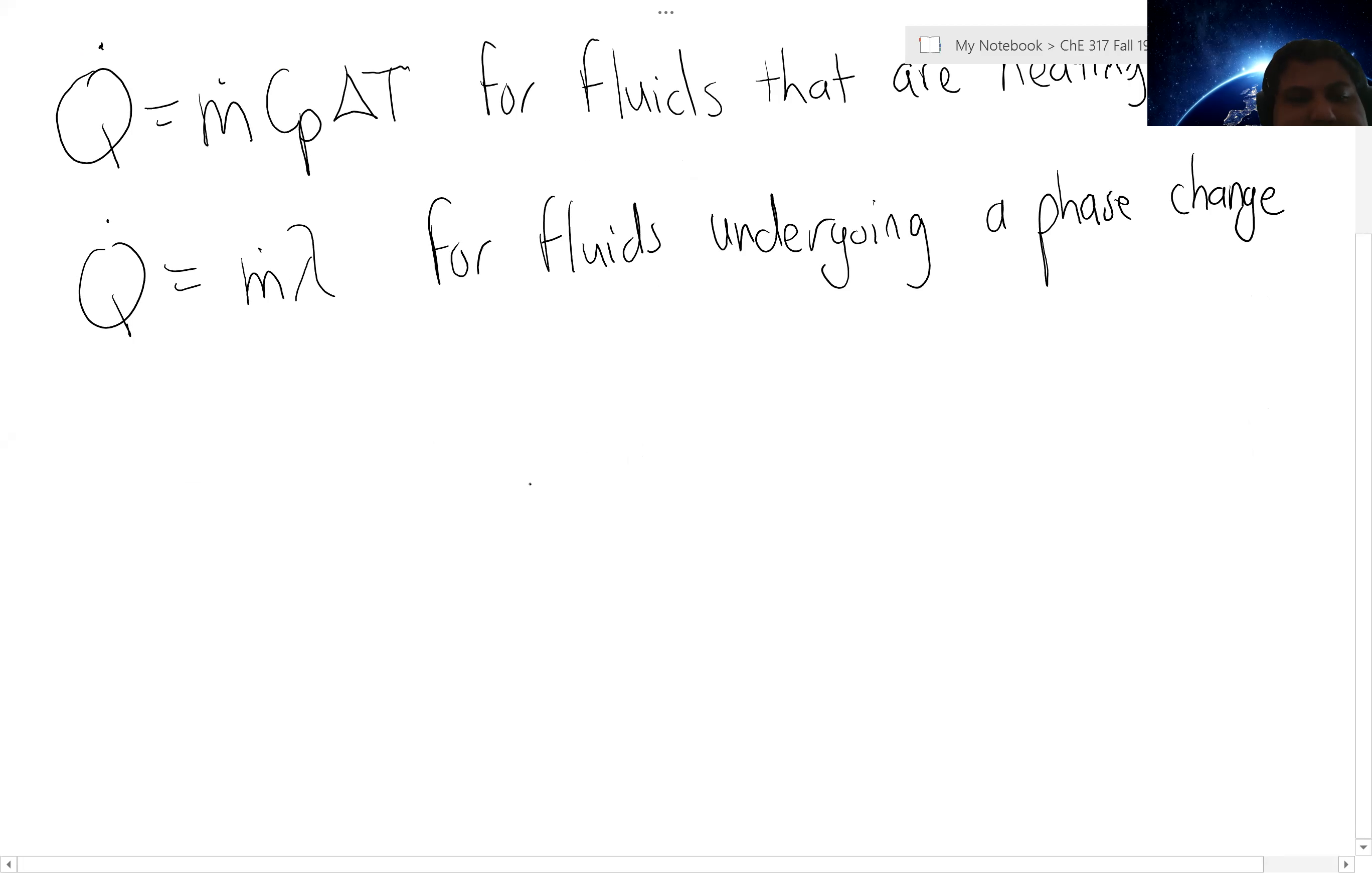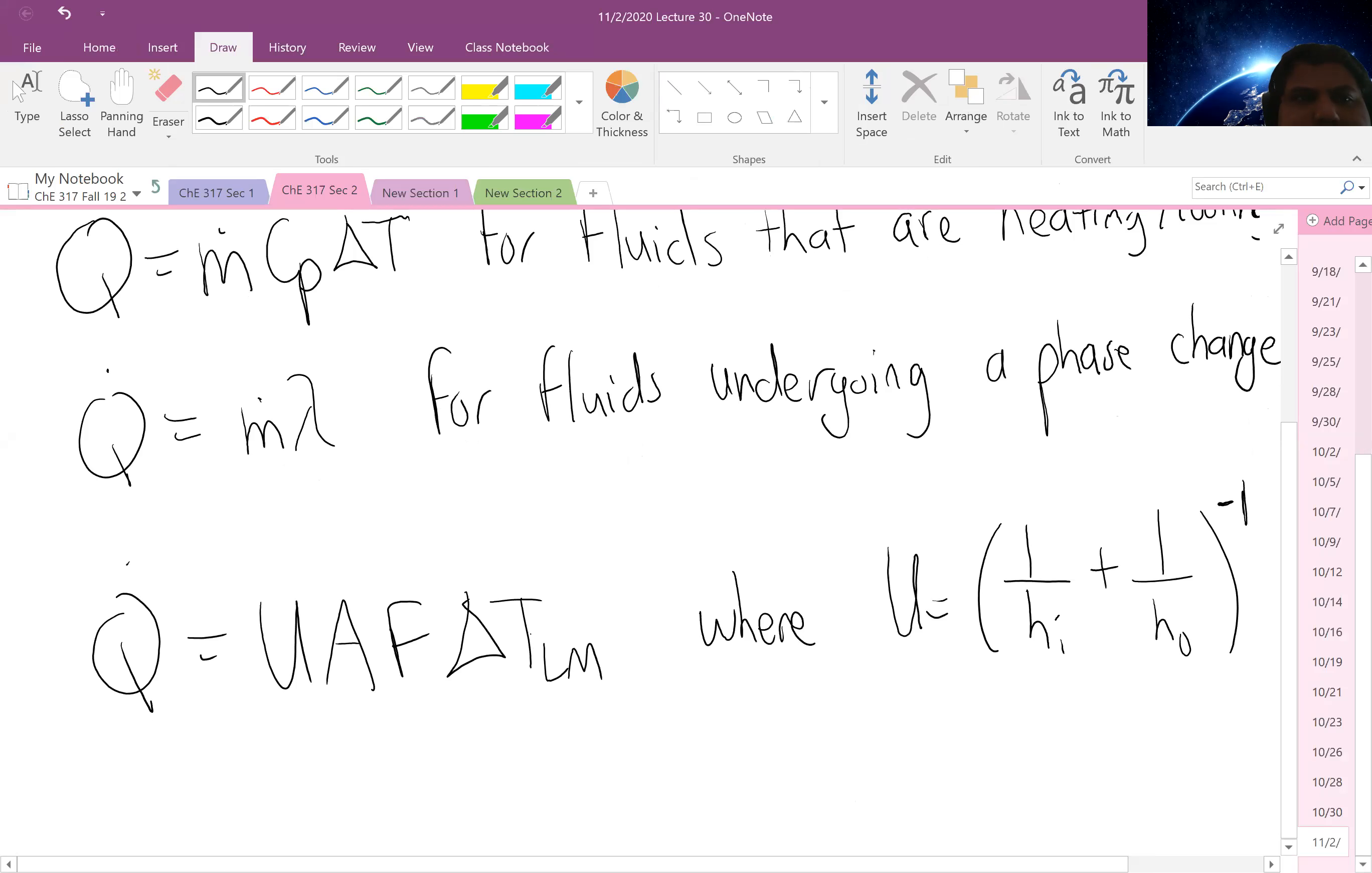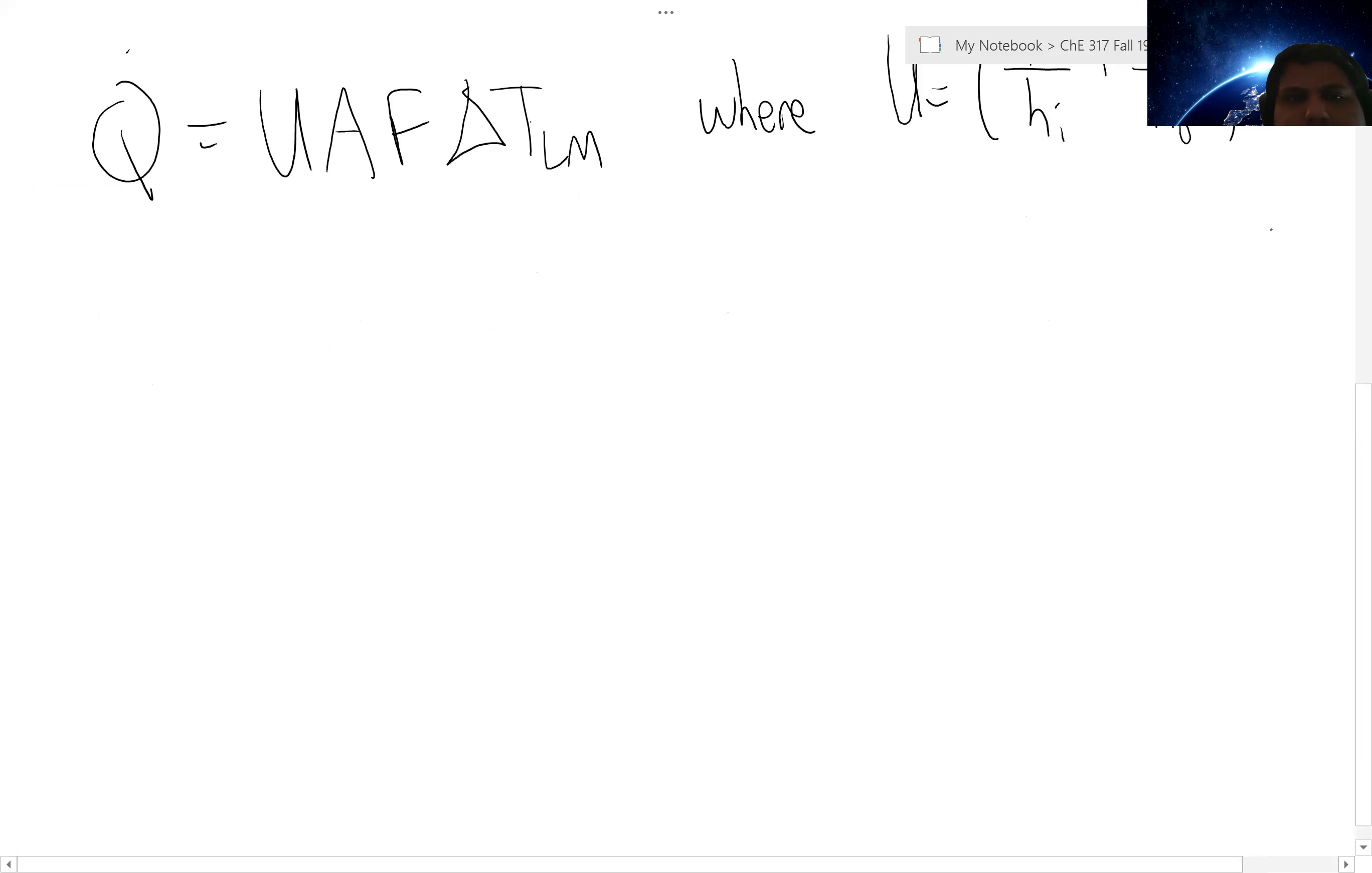We also have our design equation. Q is equal to U A F delta T log mean, where U for most systems is equal to 1 over H_I plus 1 over H_O to the negative 1. A is our surface area. Delta T log mean is our log mean temperature driving force, which is delta T_1 minus delta T_2 over natural log of delta T_1 over delta T_2.